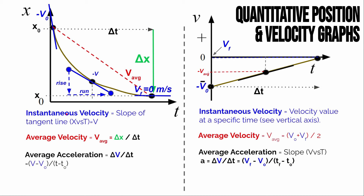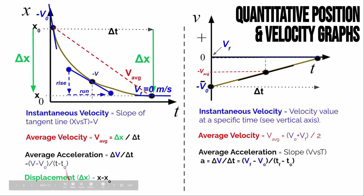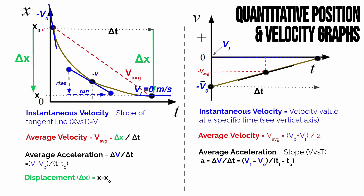The last thing to figure out is how to find displacement. It's easiest on a position-time graph. Displacement is defined as the change in position, or delta x. On a quantitative position-time graph, displacement is simply the final position minus the initial position — a vertical measurement on the position axis between those two points.